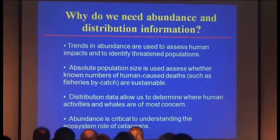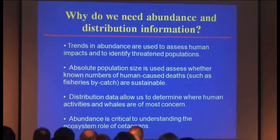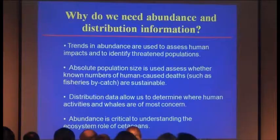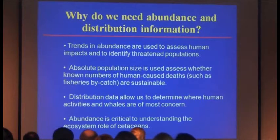First I wanted to talk about why we need to estimate abundance and obtain distribution information. One obvious reason is that trends in abundance are used to assess human impacts — it's one of the strongest tools we have to determine whether impacts are occurring, because a lot of impacts are otherwise invisible to us. It's also valuable to identify threatened populations. Absolute population size is also used to assess whether known numbers of human-caused mortalities such as fisheries bycatch are sustainable. We know more or less what population growth rate is within the realm of possibility, and if the mortality is greater than that, then we can assume it's not sustainable.